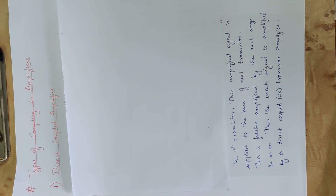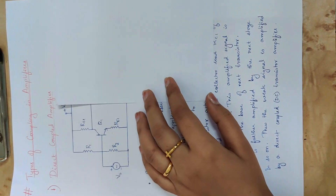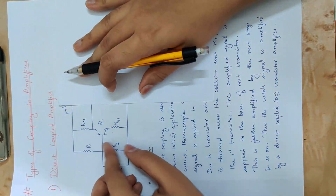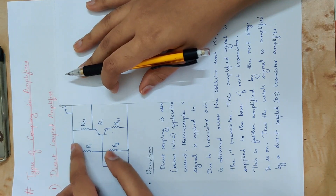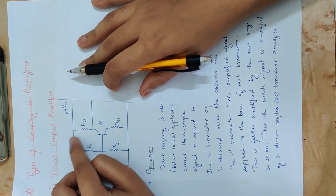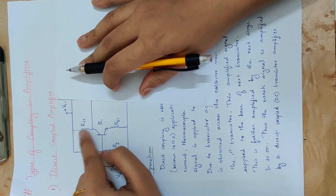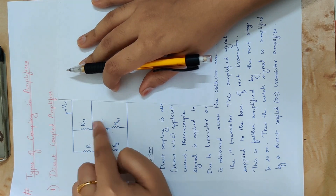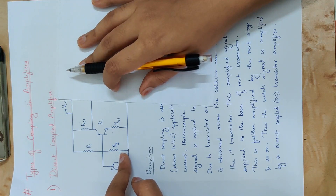If we know the regular RC coupled amplifier, then we use coupling devices in the circuit. For example, we have a normal common emitter amplifier. We also have DC biasing — voltage divider biasing with R1, R2, transistor, collector resistance, and emitter resistance. So we have a normal common emitter configuration with voltage divider biasing.